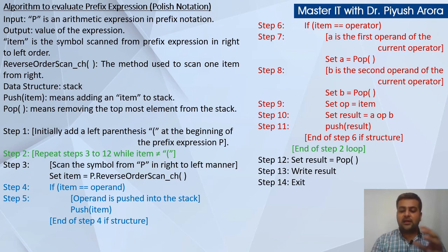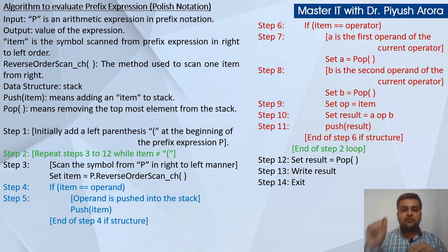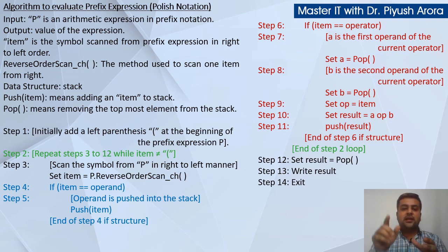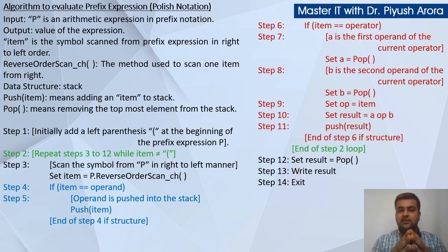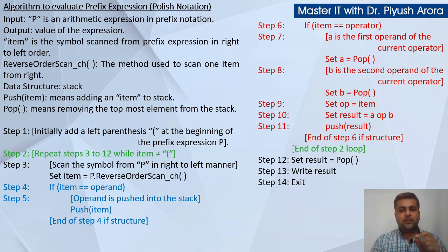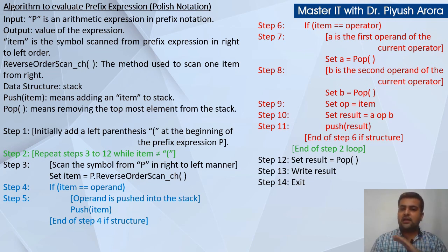Step number 10 is most important: set result equal to a op b — a is the first operand, b is the second operand, aur beech mein op yani ki operator aa jayega, aur yah evaluation ka kaam karega. Ye steps hamare evaluation of postfix se bilkul ulte hain — bilkul opposite hain. Humne postfix mein likha tha: a is the second operand of the current operator, b is the first operand. Itna difference aap yaad rakhenge, aapka kaam bahut aasani se ho jayega.